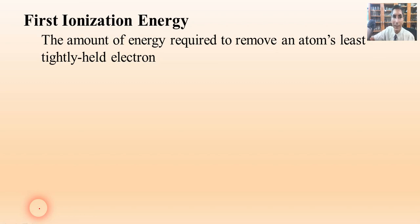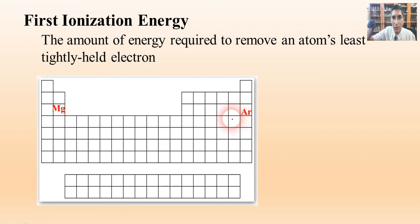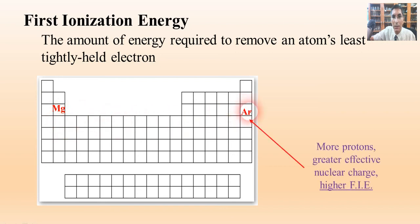Let's compare magnesium with argon on the periodic table. For a left-right comparison, we think in terms of effective nuclear charge. Argon has the greater effective nuclear charge since it has more protons, so there's more traction — it's going to be really hard to remove an electron from argon. It has a very high first ionization energy.